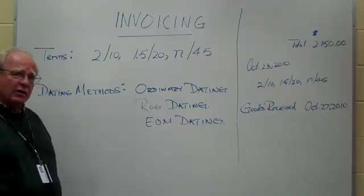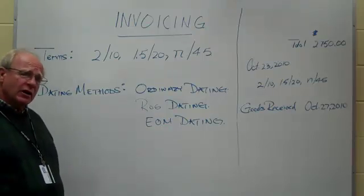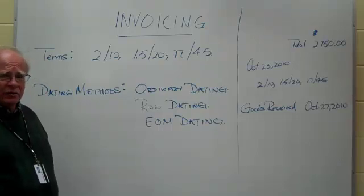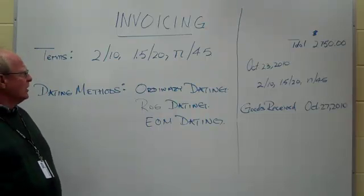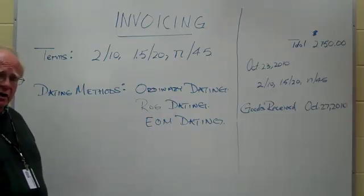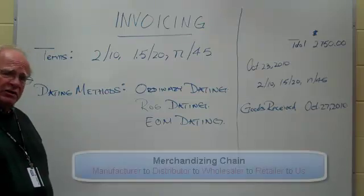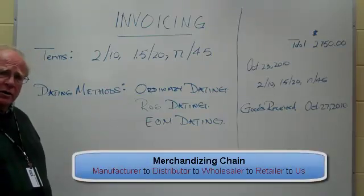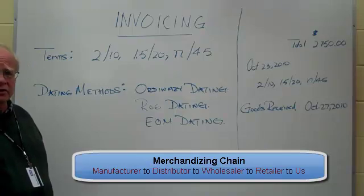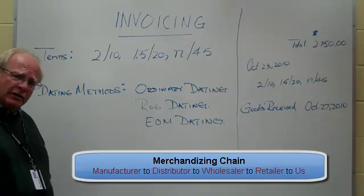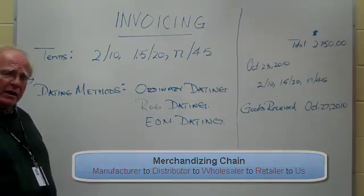We've already covered discounts at this point. You've talked about basic discounts and also about discount series. So now let's look at invoicing. You've talked about the merchandising chain — we start with the manufacturer, we move to the distributor, then to the wholesaler, then to the retailer, and finally we buy from the retailer.